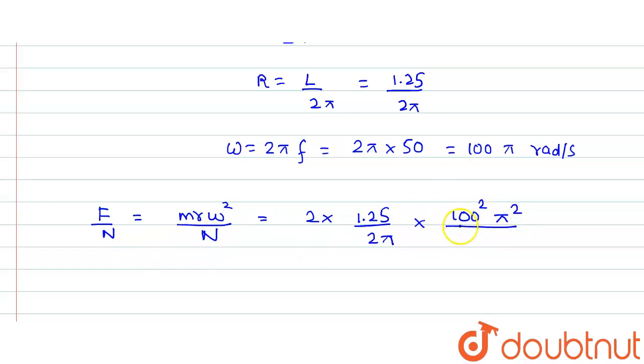What is the value of ω? ω is 100π. So it would be 100², because it is ω². So it would be 100² π². And the whole thing we need to divide it by N, which is 125. Now clearly we can see that this 2 and this 2 would be cancelled, one power of π would be cancelled.